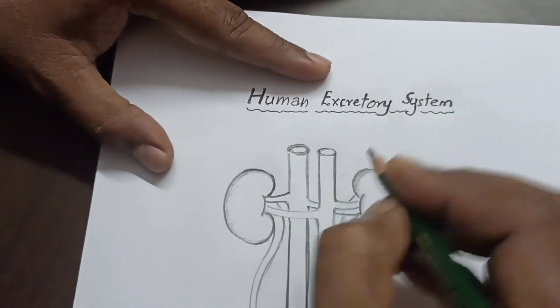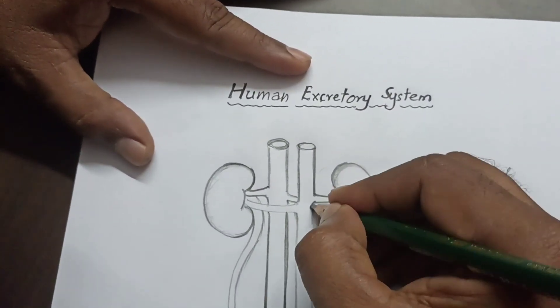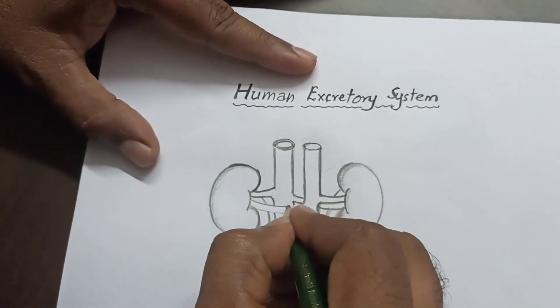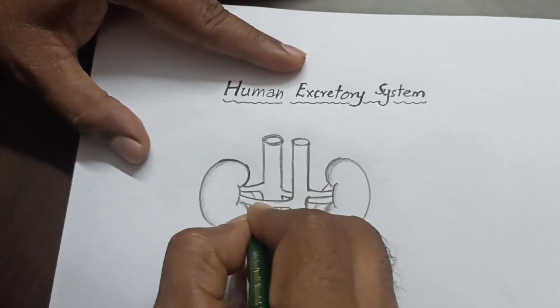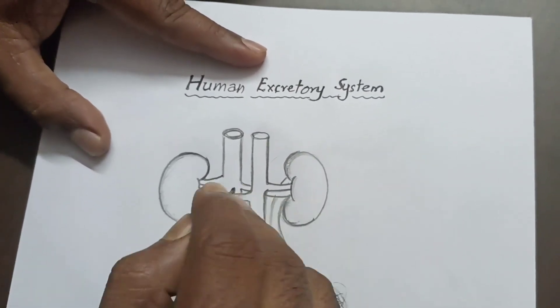This is dorsal aorta. We have to give some darkness to the dorsal aorta to differentiate from the vena cava.